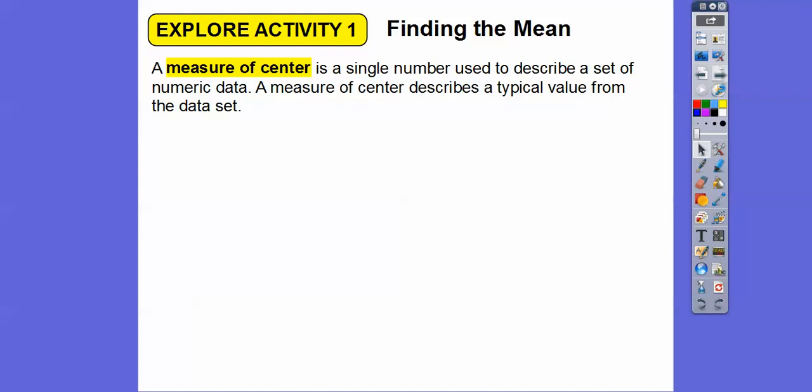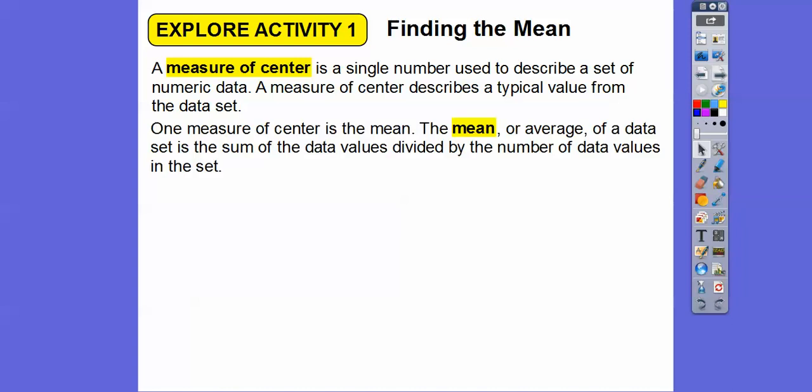So finding the mean. A measure of center is a single number used to describe the set of some numbers in data. So a measure of center describes a typical value from the data set. There's actually more than a couple, there's four or five, but we're going to discuss two of them in this lesson. One measure of center is the mean. So the mean or the average of data sets is the sum of the data, sum means add them up, sum of the data values divided by how many numbers are in the data values, divided by the number of data values in the set.